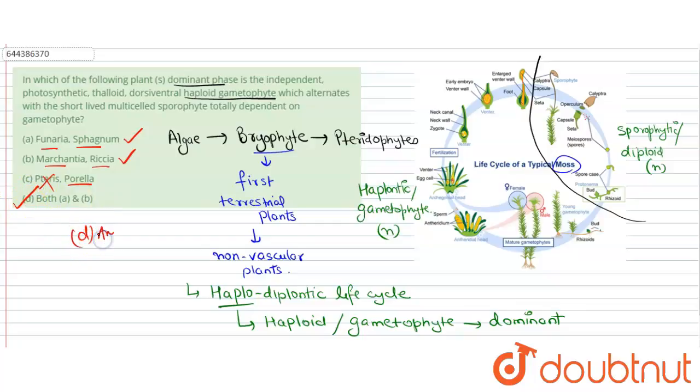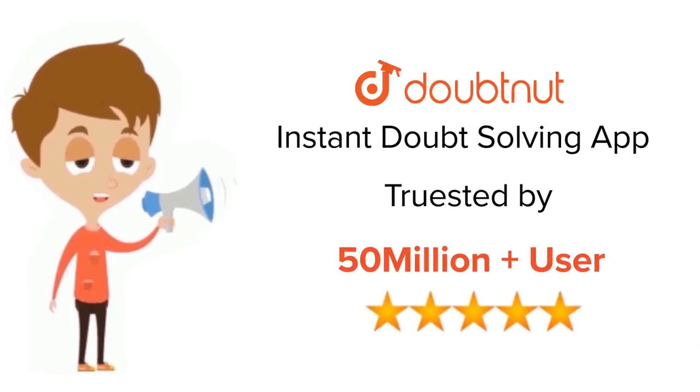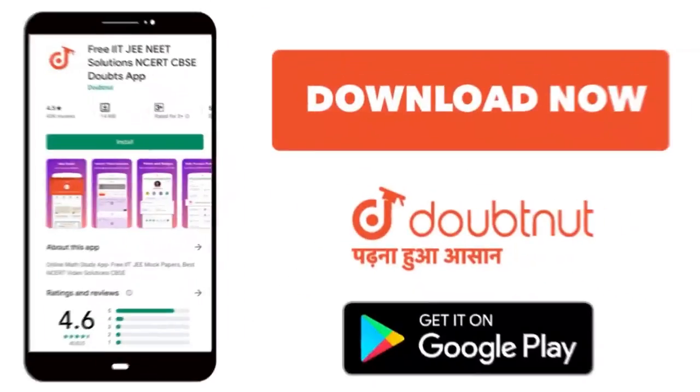So D option is our most appropriate answer. For class 6-12, IIT and NEET level, trusted by more than 5 crore students, download Doubtnut app today.